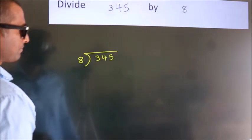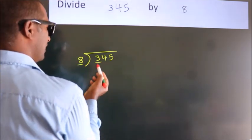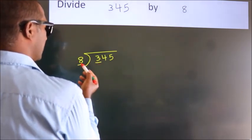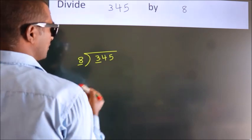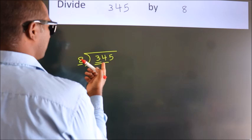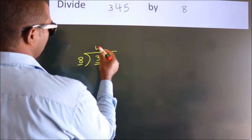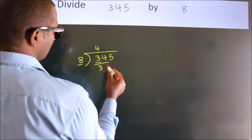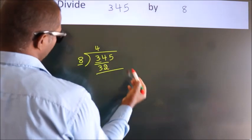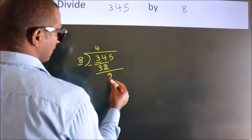Next, here we have 3. Here 8. 3 is smaller than 8. So we should take 2 numbers: 34. A number close to 34 in the 8 table is 8 fours, 32. Now we should subtract. We get 2.